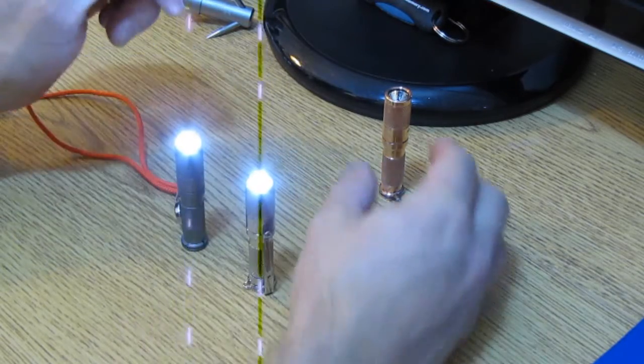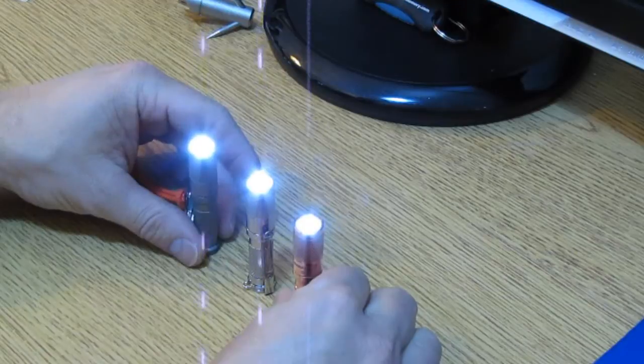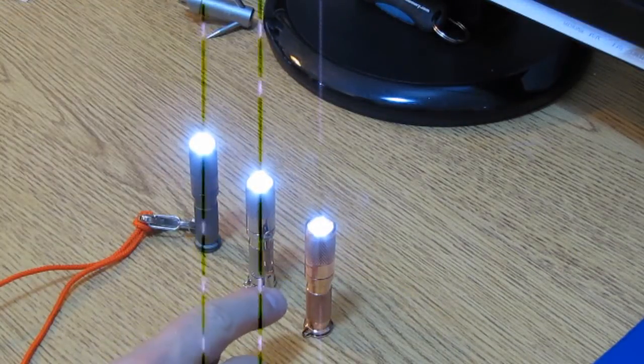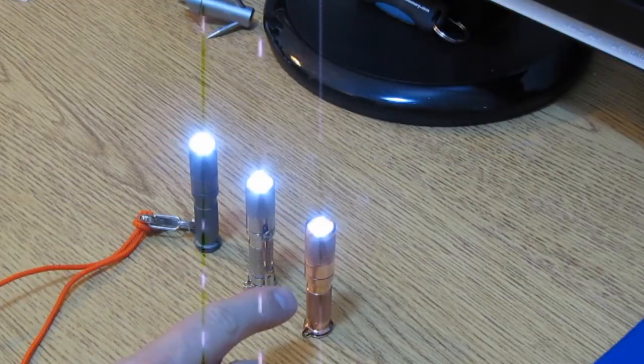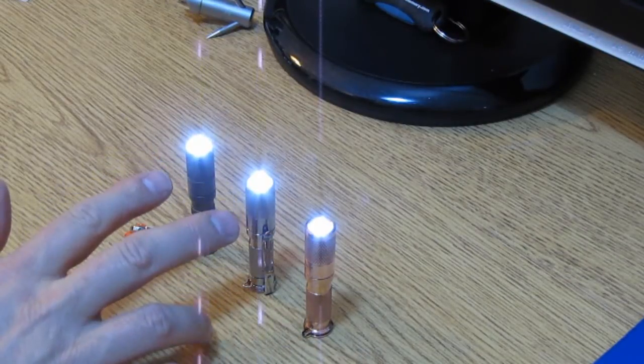And then one of the other features that the flashlight junkies are absolutely going to love is the improved pulse width modulation, or PWM. As you can see, the new light has a much improved pulse width modulation. You can see the cyclic rate of the two original lights.